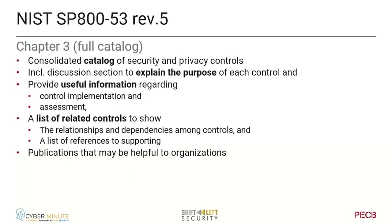Chapter three is the IKEA catalog — a consolidated catalog of security and privacy controls you need to implement, assess, provide evidence for, and inventorize. It will provide a full discussion section explaining the purpose of why you need each control, information needed for correct implementation and assessment, a list of related controls showing relationships and dependencies among controls, and a list of external references supporting implementation.